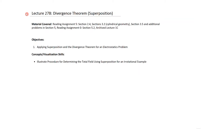Welcome to Lecture 27b entitled Divergent Theorem, where we apply the principle of superposition. The material covered comes from Reading Assignment 5, Section 2.4, Section 3.2, Cylindrical Geometry in Section 3.5, and additional problems in Section 5. The objectives are to apply superposition in the Divergent Theorem for an electrostatics problem, and to illustrate the procedure for determining the total field using superposition for an irrotational example.